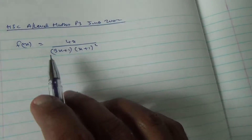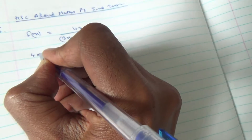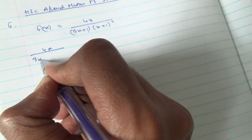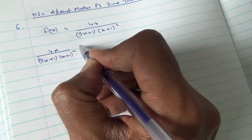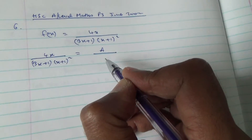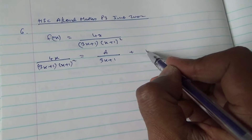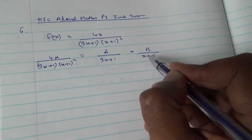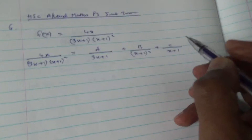Here is the expression. We can write 4x over (3x+1)(x+1)² as A over (3x+1), plus B over (x+1)², plus C over (x+1).